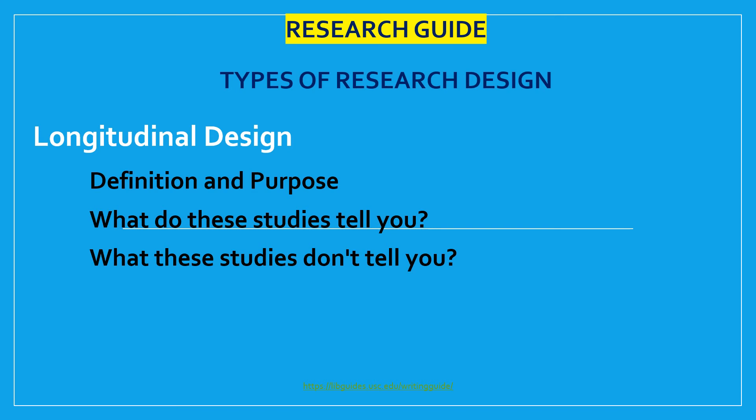The next type is longitudinal design. A longitudinal study follows the same sample over time and makes repeated observations. For example, with longitudinal surveys, the same group of people is interviewed at regular intervals, enabling researchers to track changes over time and to relate them to variables that might explain why the changes occur. Longitudinal research design describes patterns of change and helps establish the direction and magnitude of causal relationships. Measurements are taken on each variable over two or more distinct time periods, allowing researchers to measure change in variables over time. It is a type of observational study sometimes referred to as a panel study.